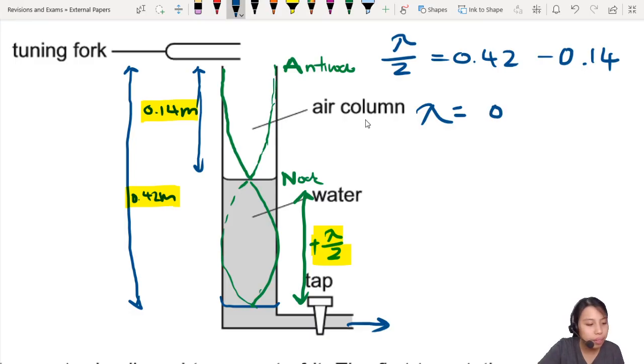You get 0.56 meters. And that is the wavelength of this tuning fork. It's fixed. It's constant.